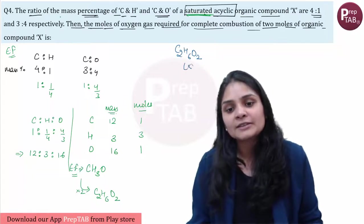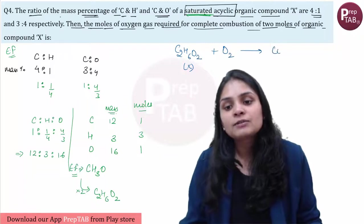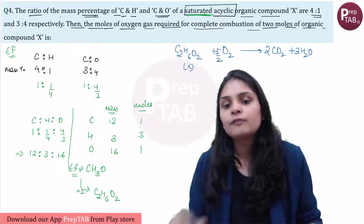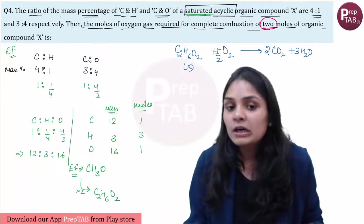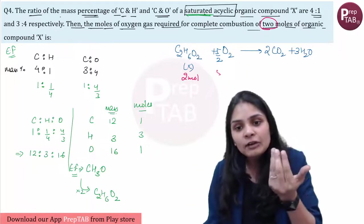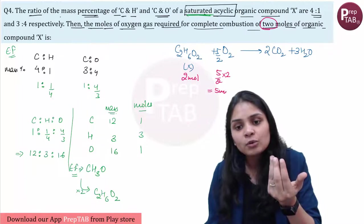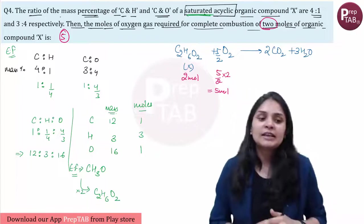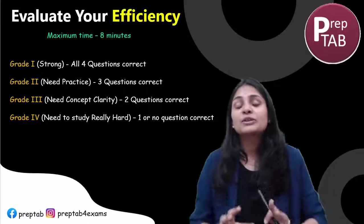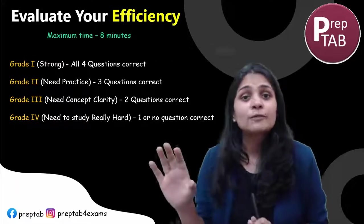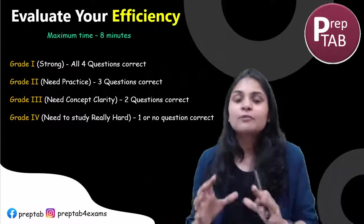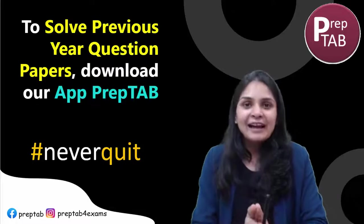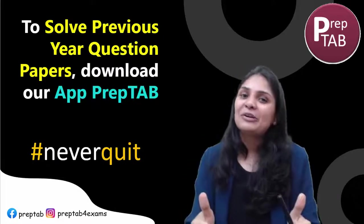C2H6O2, this is your X. Now we are doing combustion of this to give CO2 and H2O. Let's quickly balance it. Two, three, and to balance this, this will be 5. But combustion of how many moles, 2 moles. For 2 moles I will be needing 5 by 2 into 2, that means 5 moles of oxygen. So answer should be 5, 5 moles of oxygen is needed. So now having seen all the 4 questions, how simple questions come from POC, you have seen that right. Evaluate yourself, check for yourself now and prepare accordingly in the remaining time. I wish you good luck, all the best, and don't forget to download our app. Good luck.